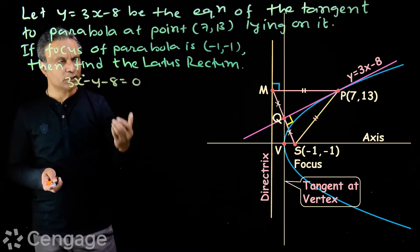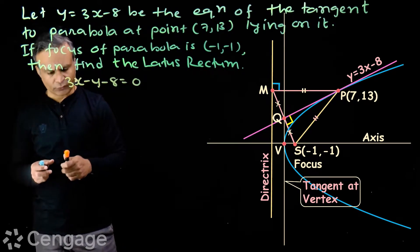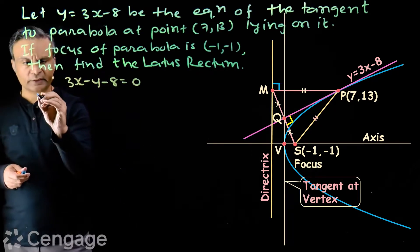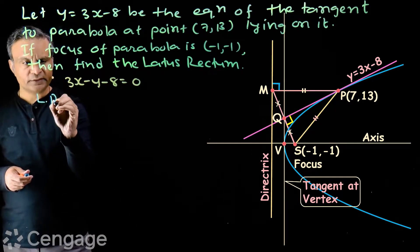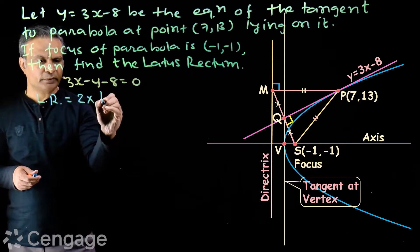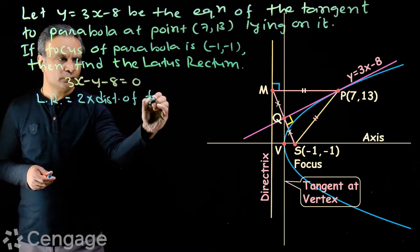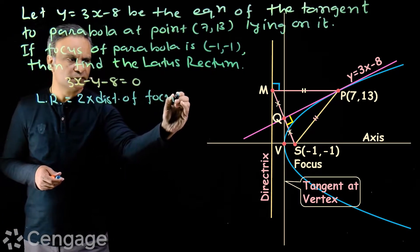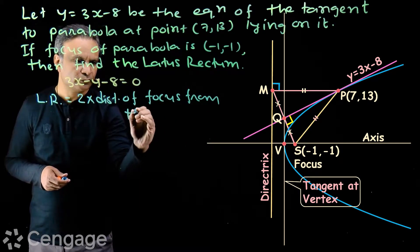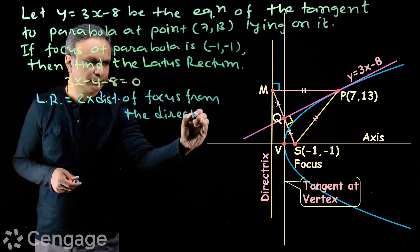We have the formula for the length of the latus rectum: latus rectum = 2 × (distance of focus from the directrix). This is the formula we will use.